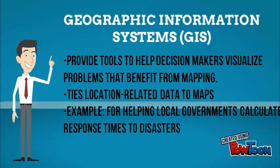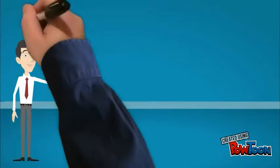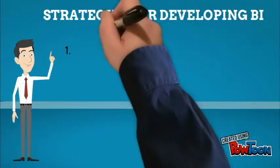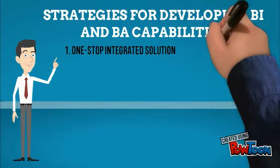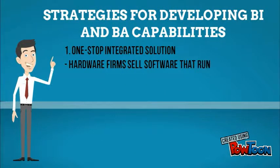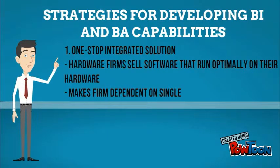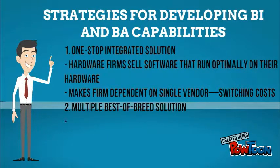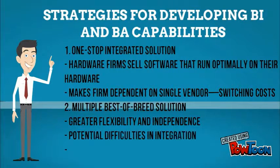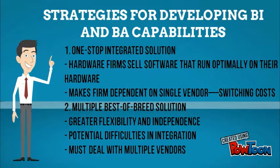An example is helping local governments calculate response times to disasters. Lastly, the strategies for developing BI and BA capabilities are: one, a one-stop integrated solution; and two, a multiple best-of-breed solution, where you adopt the best database and data warehouse solution from the vendor you believe is the best.